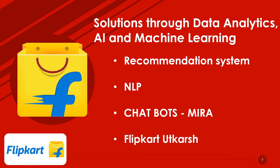In another initiative named Flipkart Samarth — meaning excellence — the e-commerce firm recently used artificial intelligence to improve the quality of products sold by its 100,000 registered sellers. Flipkart teams visited sellers' locations and identified possible gaps in their operations and the quality of products. They also used artificial intelligence and machine learning models to derive insights from data collected from buyers and sellers, which are then used to create guidelines to improve quality and reduce returns. With the use of data analytics and machine learning, Flipkart has driven its business goals of reducing product returns and cart abandonment.